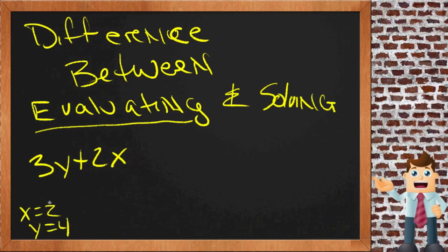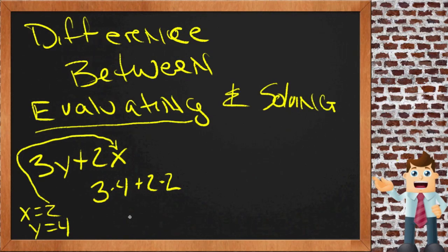So you'd take those values and you'd plug them in place of the variables in the original expression. So we'd get 2 times 2 and 3 times 4. So we'd have 3 times 4 plus 2 times 2. So 3 times 4 is 12, and 2 times 2 is 4. So we'd have 16.